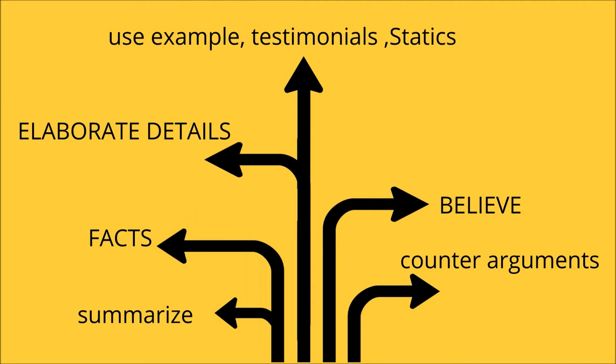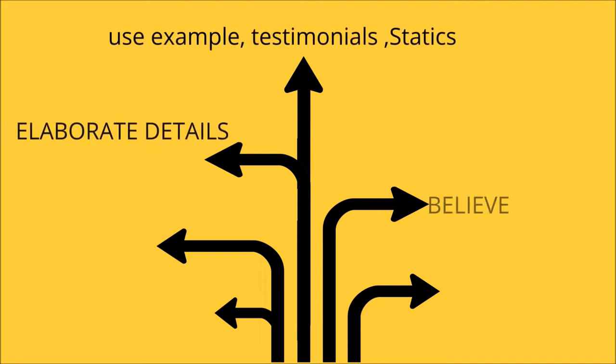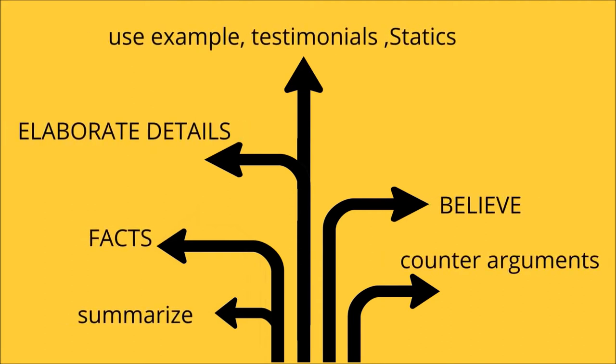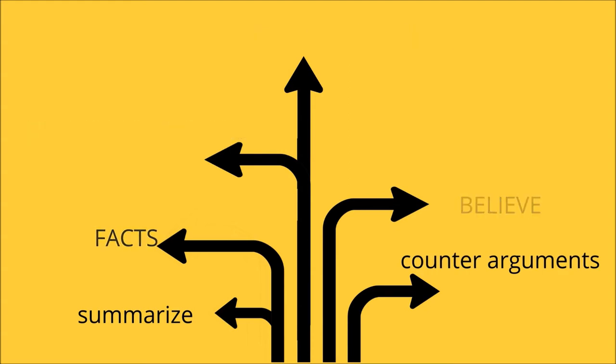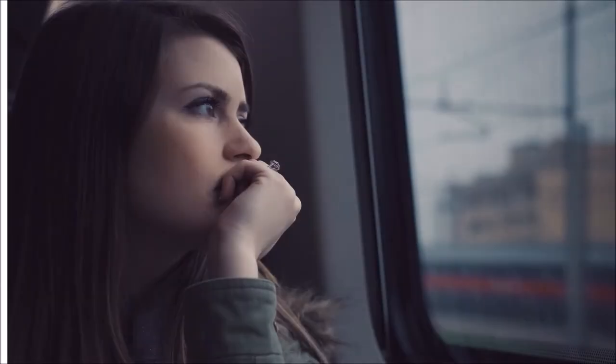Clearly state what you want the audience to do or believe. Summarize your information from time to time as you speak. Use examples, testimonials, and statistics to prove the effectiveness of your solution. Prepare counter-arguments to anticipate objections. In this step, talk about who will benefit and articulate how this idea will improve people's work lives, even in a small way.